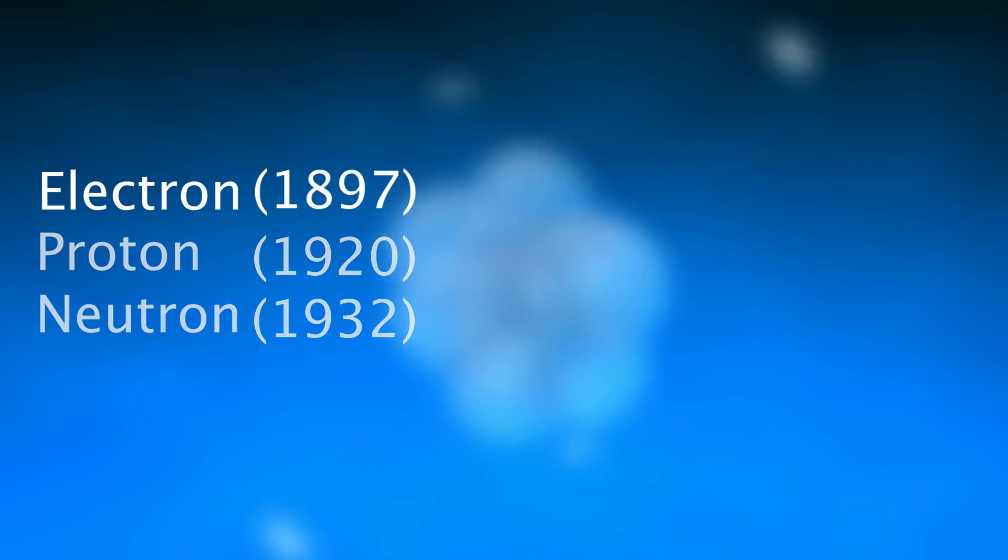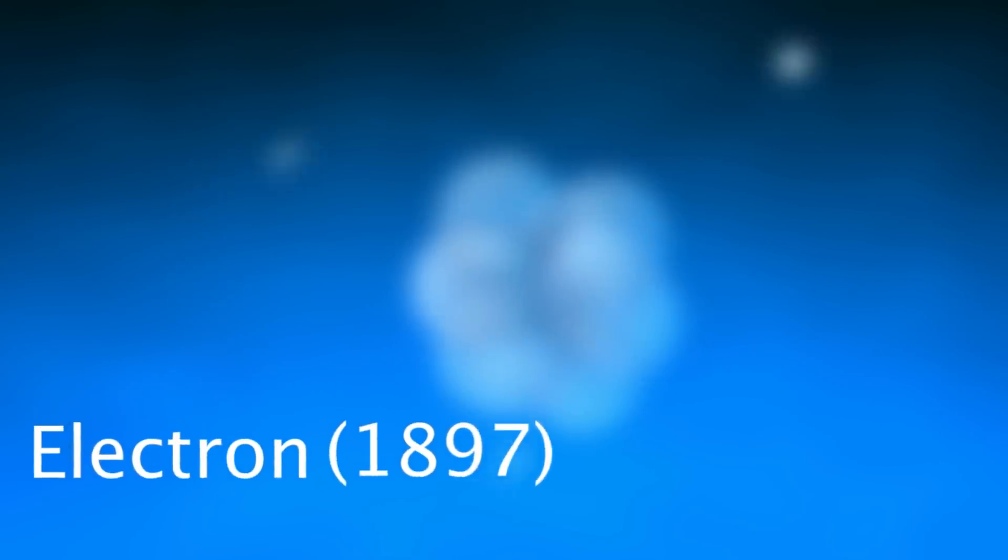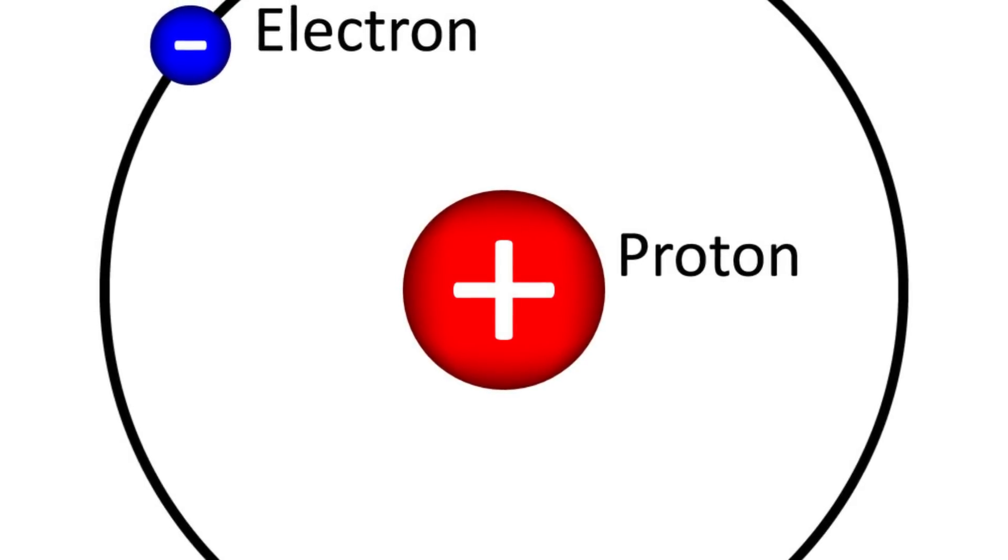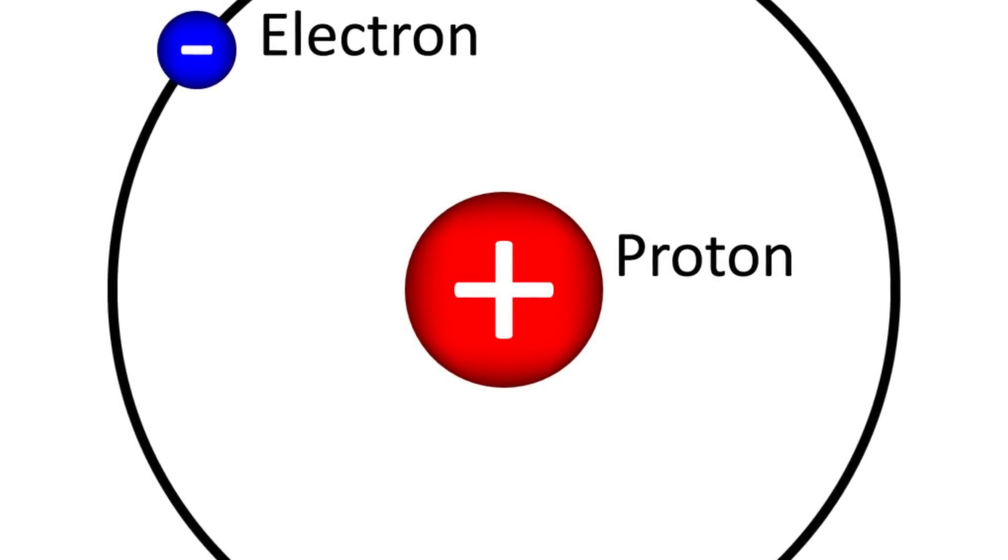The first one that was proven to exist, which is also the smallest of the three, is the electron. The concept of the electron was first theorized in 1838 by philosopher Richard Laming. He hypothesized a quantity of electric charge which could not be subdivided and would explain certain properties of an atom.